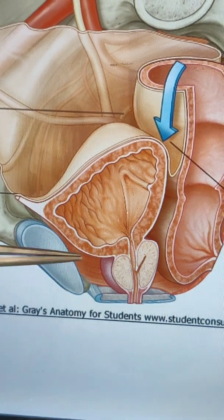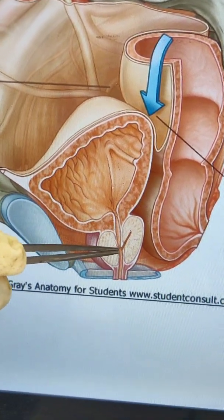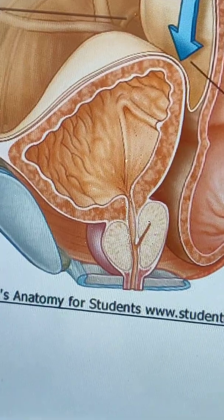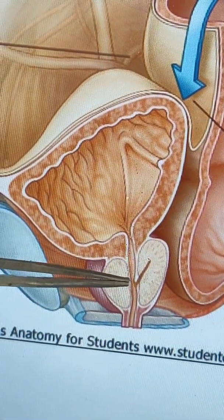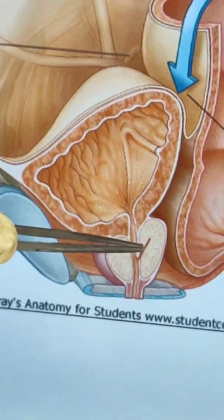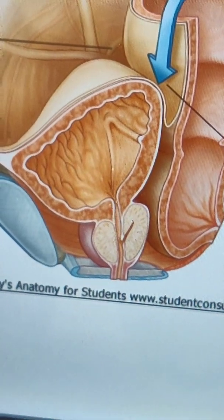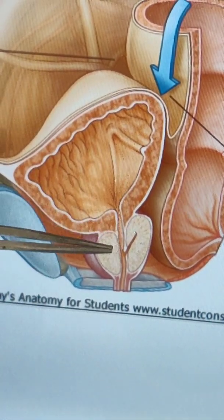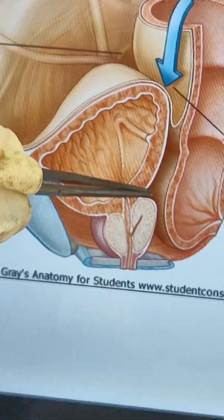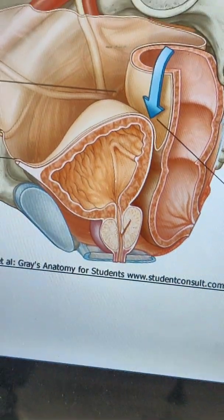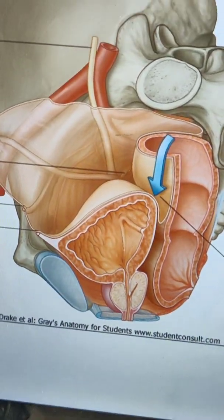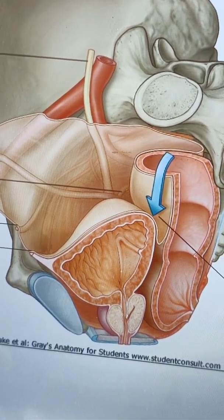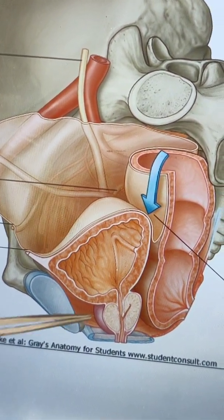The prostatic utricle is a blind sac inside the prostate, about 6 mm long, directed upwards and backwards between the median and posterior lobe of the prostate. It is homologous with the uterus or vagina in the female.